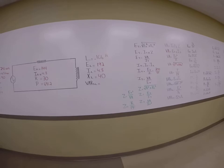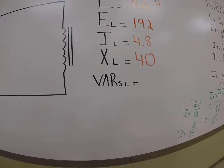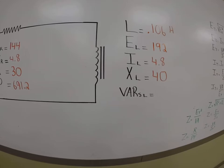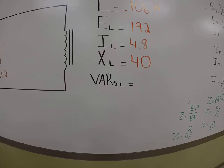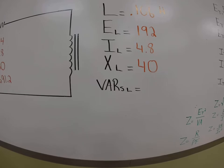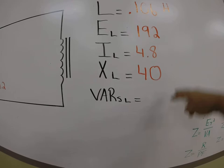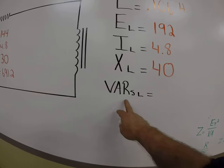So the first thing we want to do is realize what VARs is. Now VARs is going to act like P, like across the resistor. The only difference is no true power is being created across an inductor in an inductive circuit. So it's referred to as VA reactive, or we usually refer to that as wattless power, but we still can calculate it. Very similar to power across a resistor, we're going to use the quantities in the inductive column to solve for VARs.